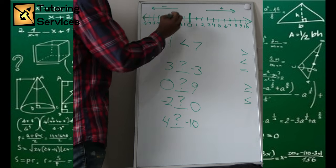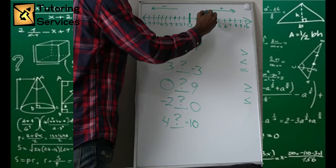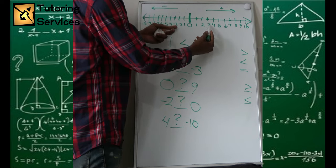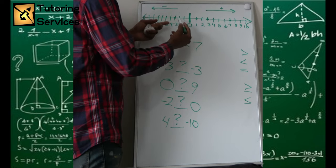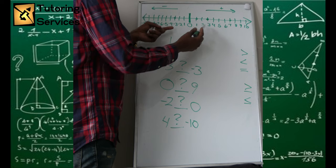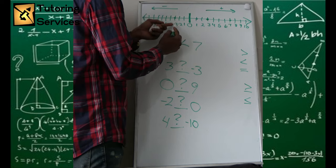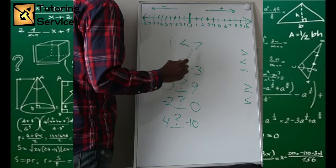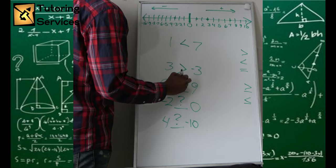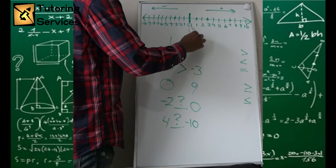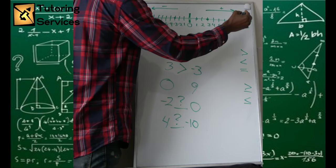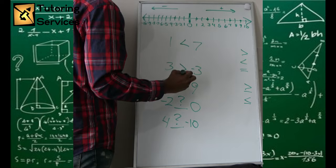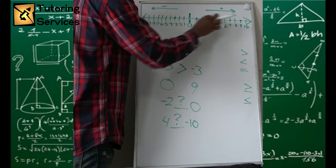What about three and negative three? We have negative three over here and positive three over here. Negative three compared to three is more in a negative direction — that means negative three is less than three. Or, three is in a positive direction from negative three, meaning three is greater than negative three. What about zero and nine? You have to go more in a positive direction to get to nine, so zero is less than nine.